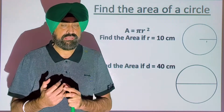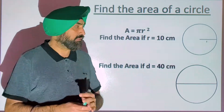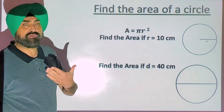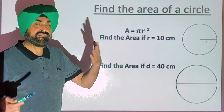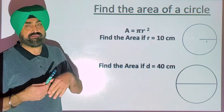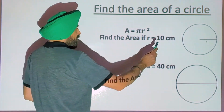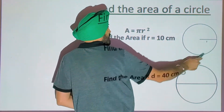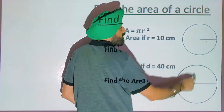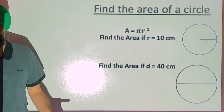The meaning of area — for example, area of a circle is how much you will paint, for example, if you want to paint a circular object or circular frame. How much you will paint it, how much area you will cover inside the circle — that's the area.